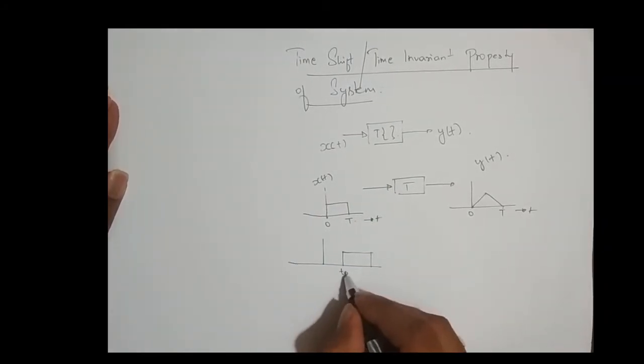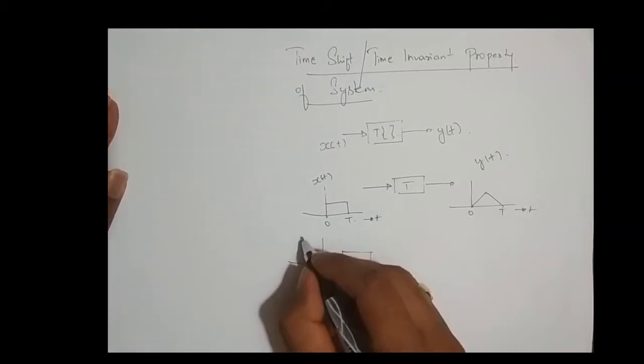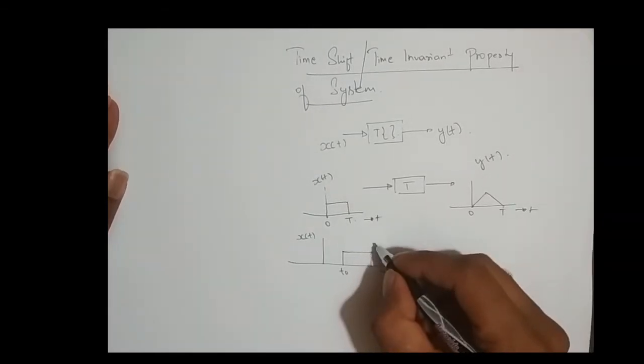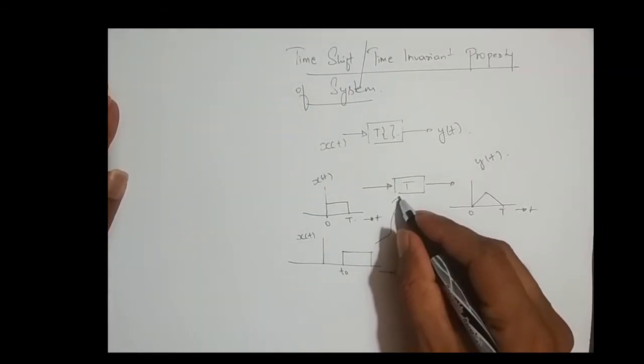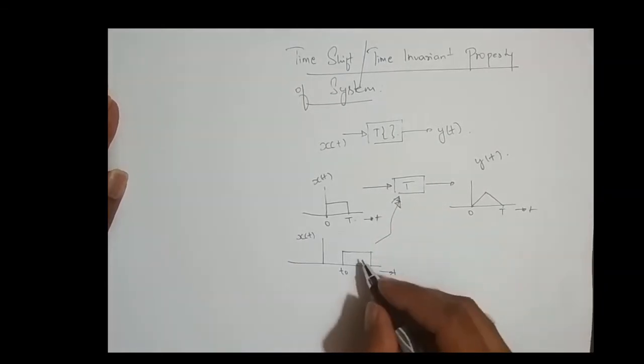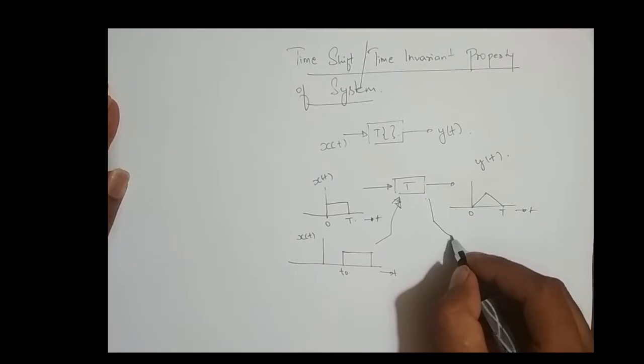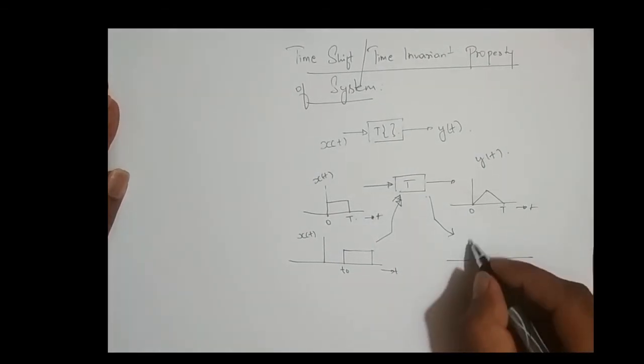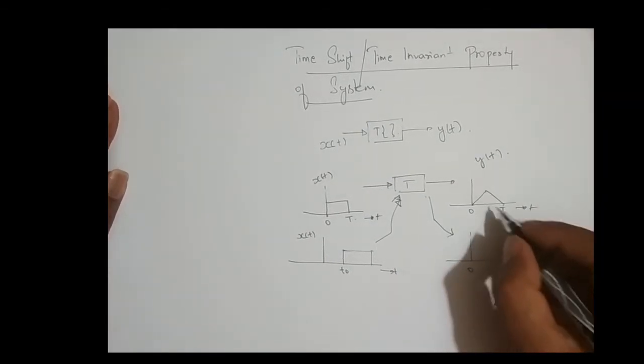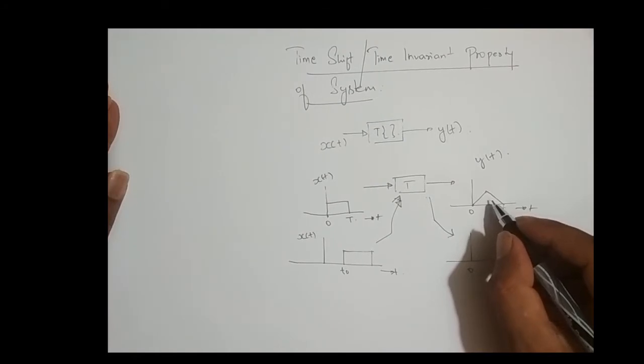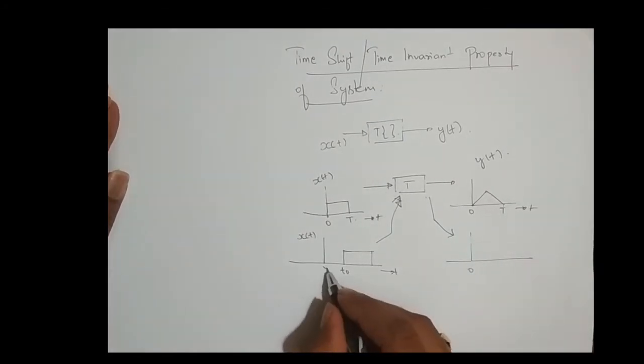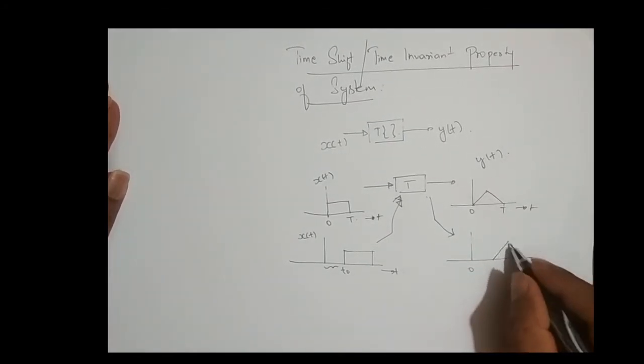I'm shifting the same signal to the same system. I mean, I'm shifting this signal to the same system T, and the output from this system should be what? Should be a rectangular pulse, but it has to be shifted t_0 times, something like this, t_0 times.